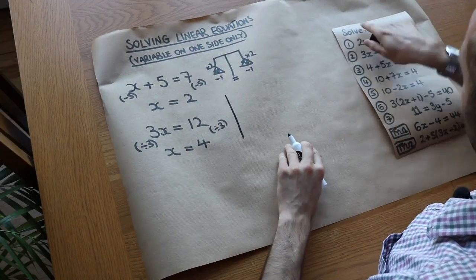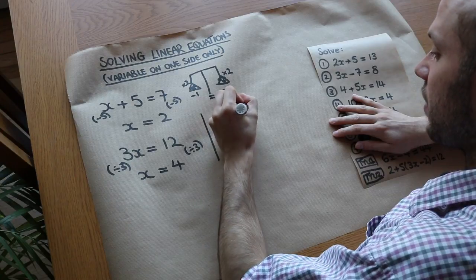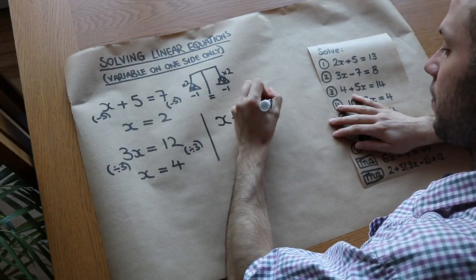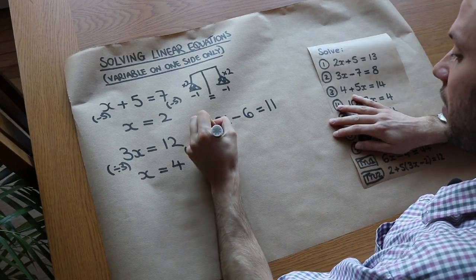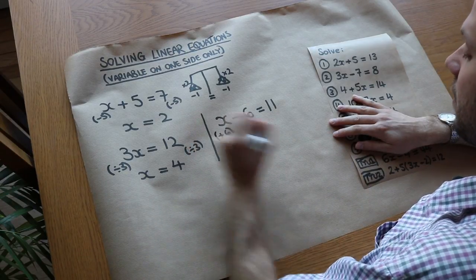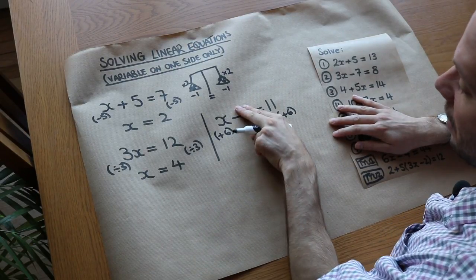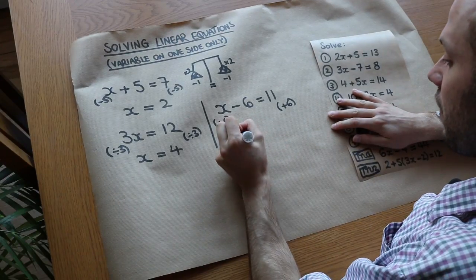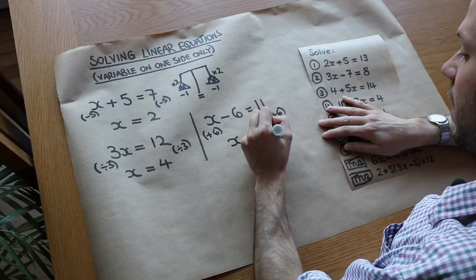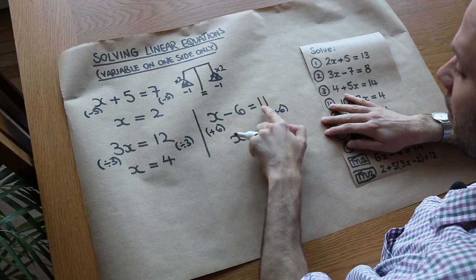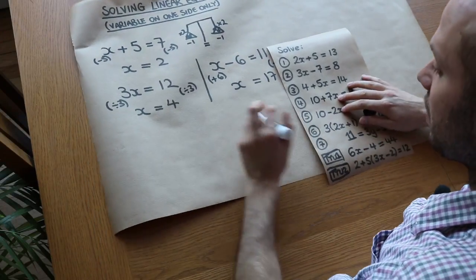Just one more quick example before we get onto these. If we had x minus 6 is equal to 11, how do we get rid of that minus 6 to leave x on its own? We do the opposite — we add 6. So I add 6 to the left hand side, then I also have to add 6 to the right hand side. Adding 6 gets rid of that minus 6, leaving just x. Adding 6 to 11 gives 17, and that's the answer. Let's check: 17 minus 6 is indeed 11. It worked.